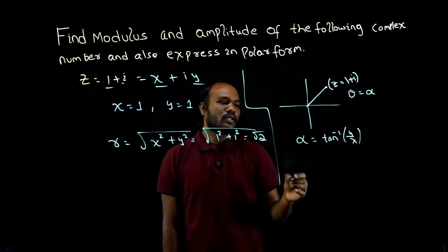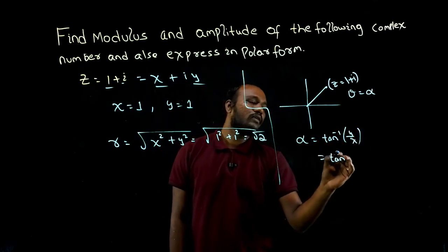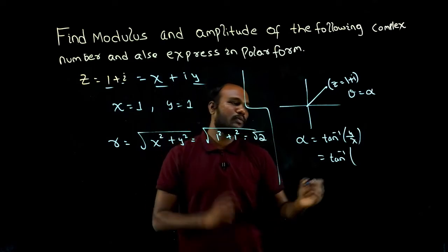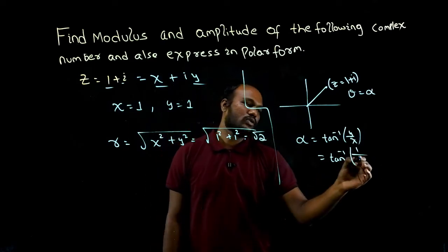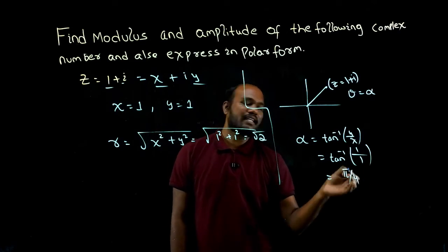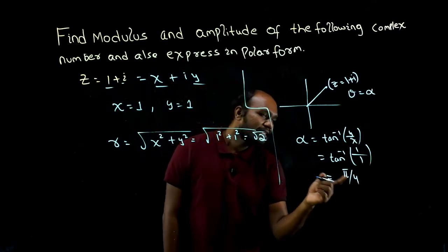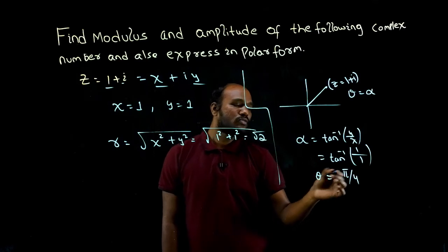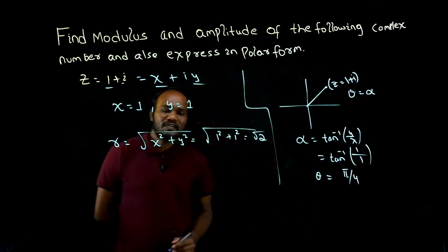What is alpha? Tan inverse of y upon x. So if I substitute that, tan inverse of, what is y? y is 1. What is x? That is also 1. Tan inverse of 1 is pi over 4. You will get this in a calculator. So alpha is this, which means theta will also be this.